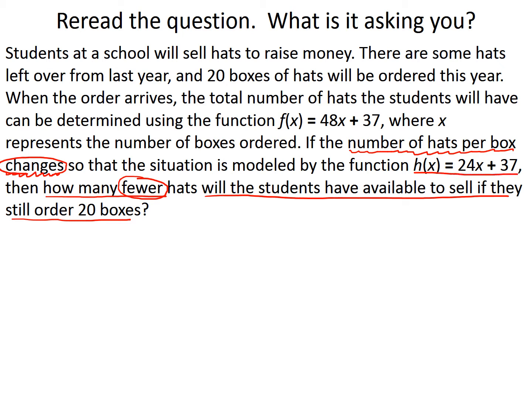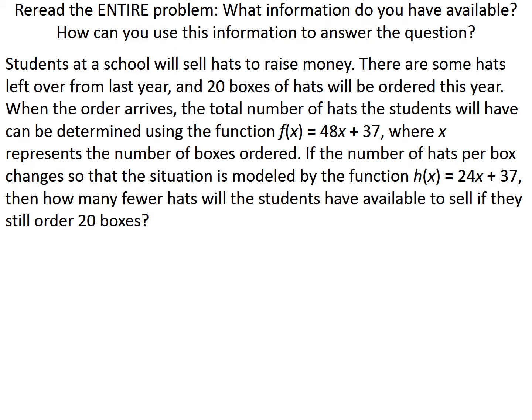So the situation is now modeled by the function h of x equals 24x plus 37. The question is asking: the number of hats per box is changing, so how many fewer hats will we have available? Something is going to happen that's going to make us have fewer hats. Let's reread the entire problem and this time circle the information we think is important, then ask ourselves how we can use this information to answer the question.